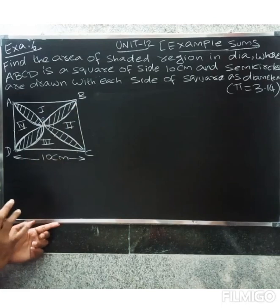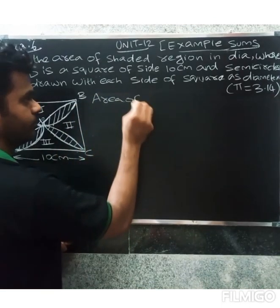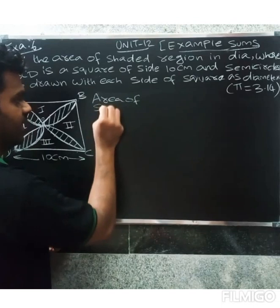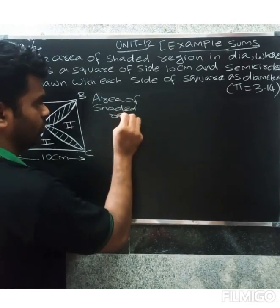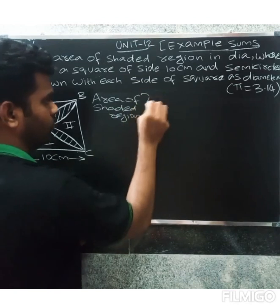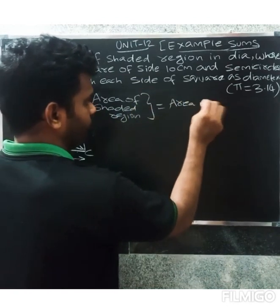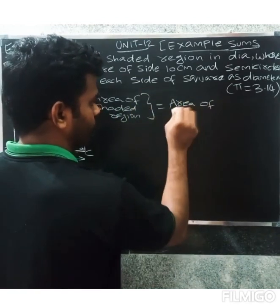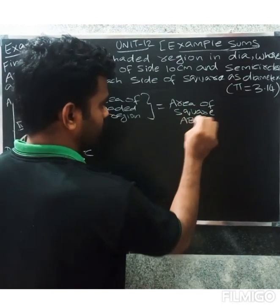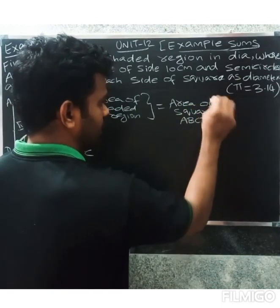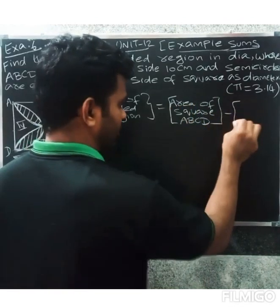So there are 4 semicircles. With semicircle ABCD, the shaded region equals the total area of the square ABCD, and we will subtract certain areas.